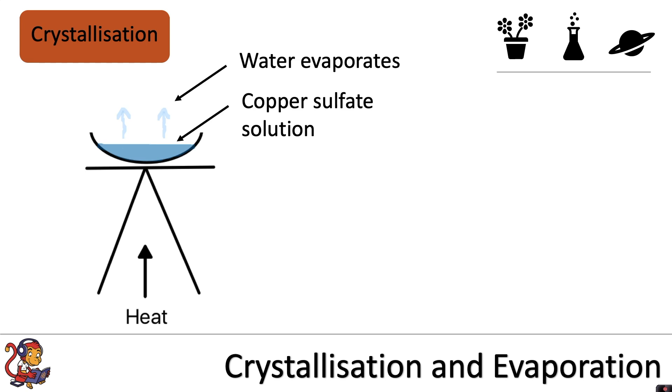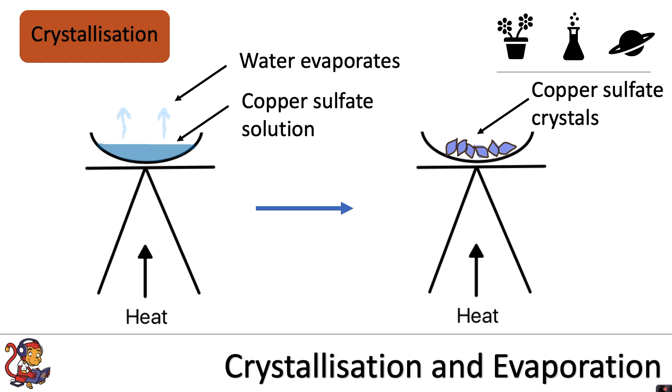Another example of a solution that you can separate using crystallization is copper sulfate solution. Again, you would gently heat some copper sulfate solution in an evaporating dish. The water would evaporate and it would leave copper sulfate crystals behind.